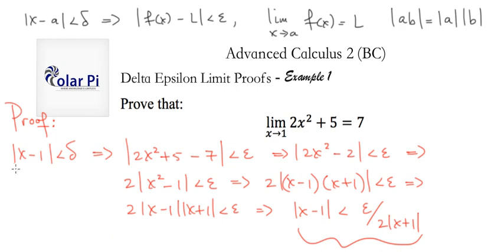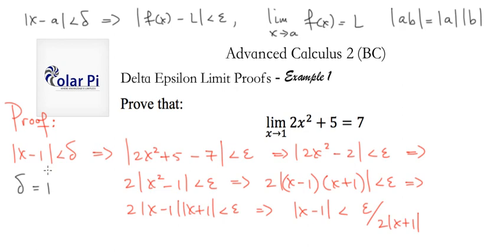Notice how similar that last statement is to the delta condition — we almost want delta to equal epsilon divided by 2·|x + 1|. However, we want to rid the delta-epsilon relationship of any x's. So here's what we do: we make the assumption that delta equals 1. This assumption makes sense because the delta-epsilon definition is an epsilon challenge — if delta equals 1 is sufficient for your epsilon, great. If delta equals 1 is not a good enough choice, then based on this assumption we'll come up with another value of delta that will definitely work when delta equals 1 is too big.